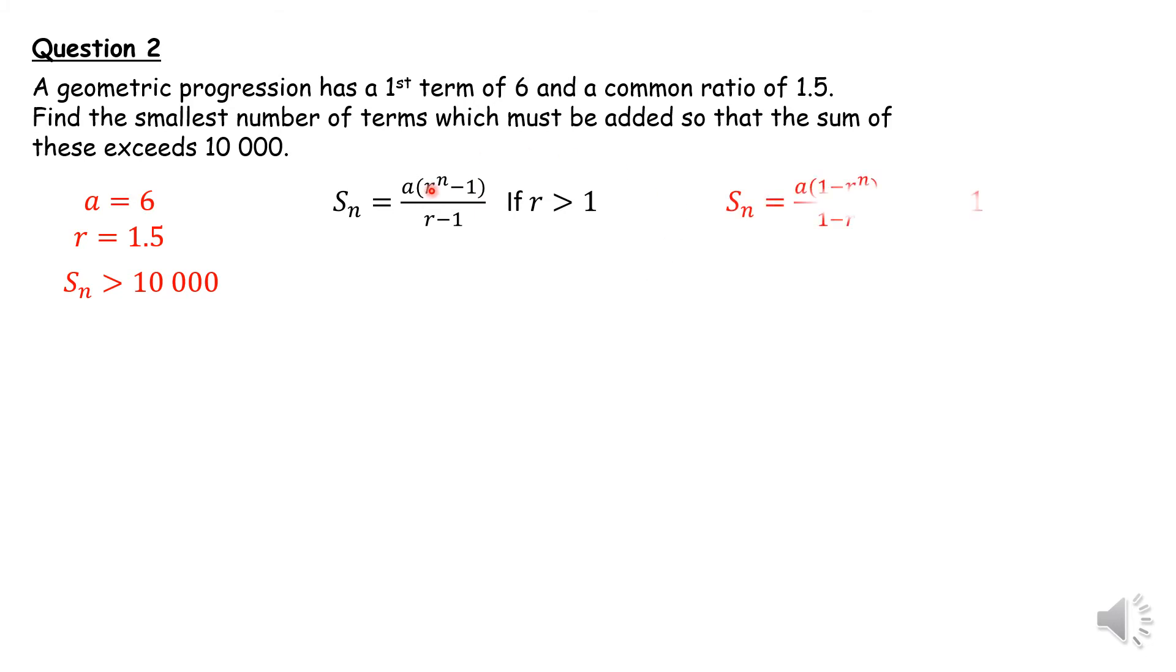You can use any one of the two formulas. When the ratio is bigger than 1, like this case where the ratio is 1.5, it's advisable that you use this one. But ultimately, it doesn't matter. Substituting in for a and for r, 1.5 minus 1 is 0.5, then 6 divided by 0.5 gives me 12.